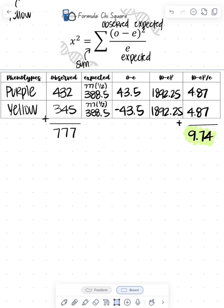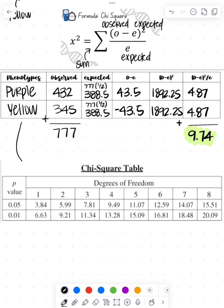So this is our calculated chi-square value. But what does this tell us? It doesn't tell us anything. So now we have to look at our chi-square chart.